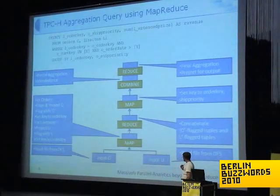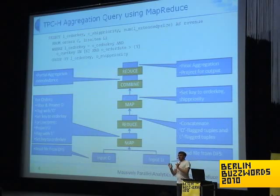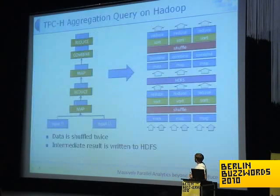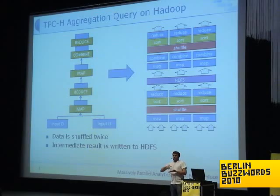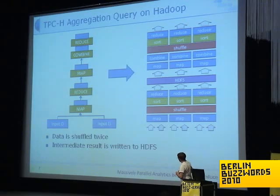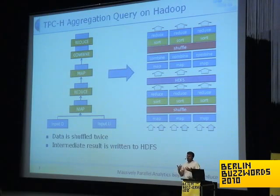To do that, the first MapReduce job reads both input sets, tags where the tuples come from, repartitions the data on the join key, and in the reducer the join is done. Mapping that to a Hadoop execution plan would result in two times doing basically the same thing: mapping, shuffling the data, sorting the data at the reducer, and then doing the reduce step. In between those two MapReduce jobs, the results would be written into HDFS. That means the data is shuffled twice and the intermediate result is written into the file system.